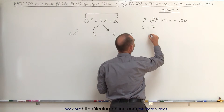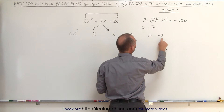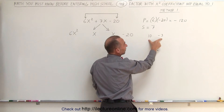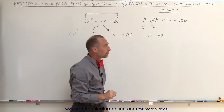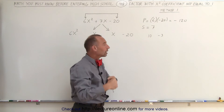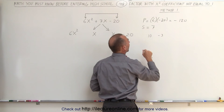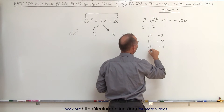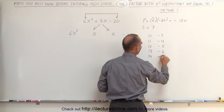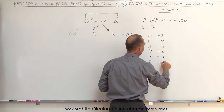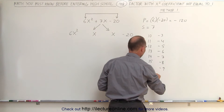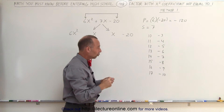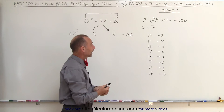So what are the possibilities? For example, you can have 10 and negative 3 — when you add those together you get positive 7. However, when you multiply them together you get negative 30, which is not negative 120. You can plug in all combinations that sum to positive 7: for example, 11 and negative 4, 12 and negative 5, 13 and negative 6, 14 and negative 7, 15 and negative 8, 16 and negative 9, 17, and so forth. Only one of those combinations will give you negative 120 when multiplied together.